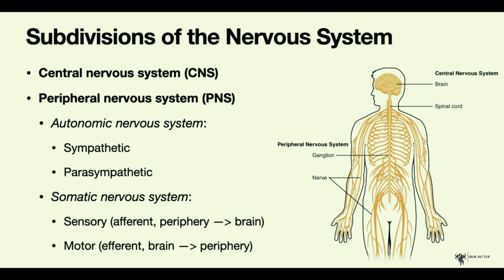On the other hand, the motor part is responsible for transmitting signals to muscles, for instance, in order to activate specific responses based on the type of information received from the environment — so based on the movement that needs to occur and the context. Accordingly, the motor component of the somatic nervous system is called the efferent component because it goes in the opposite direction, from the brain out to the peripheral nervous system.